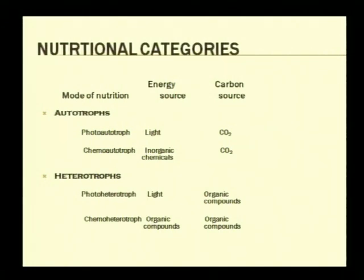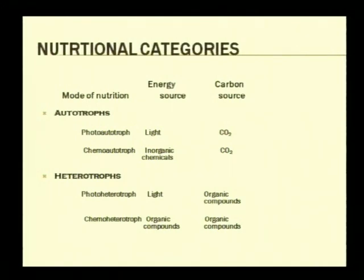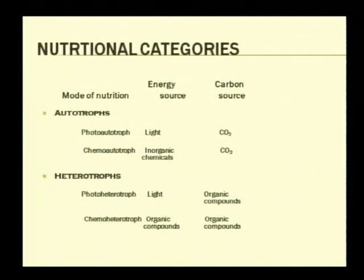Depending upon the mode of nutrition, bacteria can be broadly classified as autotrophs and heterotrophs. Among autotrophs, an organism could be a photo-autotroph or a chemo-autotroph. Among heterotrophs, an organism may be a photo-heterotroph or a chemo-heterotroph. The kind of substrates and energy sources an organism uses will determine its nutritional category.